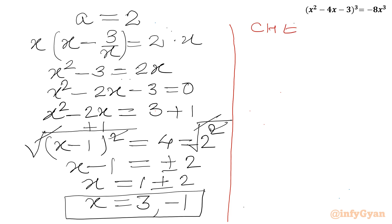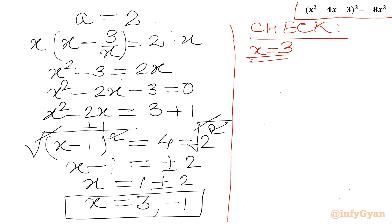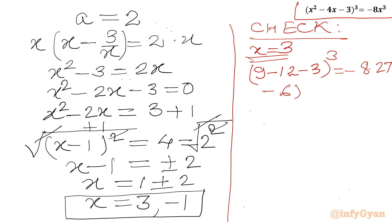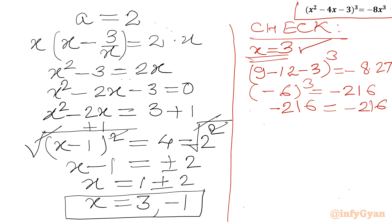Let us verify x = 3: LHS = (9 - 12 - 3)³ = (-6)³ = -216. RHS = -8 × 27 = -216. Since LHS = RHS = -216, x = 3 is a verified solution.